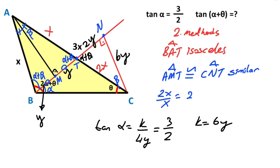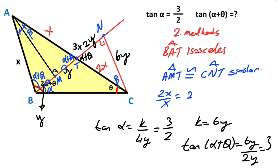So focusing on this triangle, tangent of alpha plus theta equals 6y over 2y. Therefore tangent of alpha plus theta is equal to 3. Thanks for watching! If you want more videos like this, please don't forget to like and subscribe to my channel. Take care and bye bye!